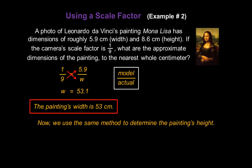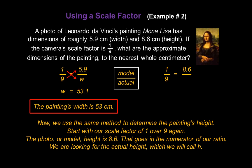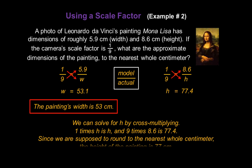Now we use the same method to determine the painting's height. Start with our scale factor of 1 over 9. The photo or model height is 8.6, which goes in the numerator of our second ratio. We're looking for the actual height — let's call that H. Cross-multiplying: 1 times H is H, and 9 times 8.6 is 77.4. Rounding to the nearest whole centimeter, the height of the painting is 77 centimeters.